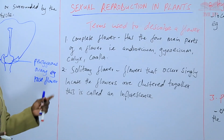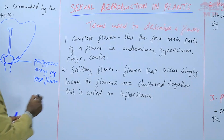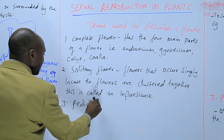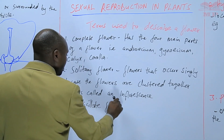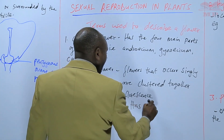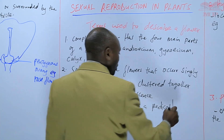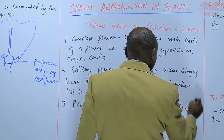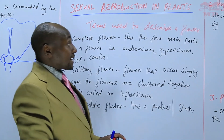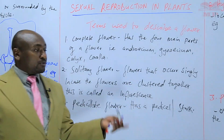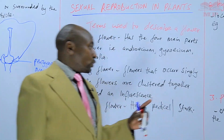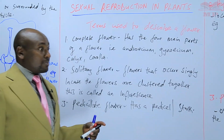You may also find a term such as a pedicellate flower. This simply means a flower that has a pedicel — a pedicel is a stalk, a flower that has a stalk. There are so many terms that are used to describe the flower. Some we have mentioned before, like the staminate flower and the pistillate flower, and we've also mentioned terms such as bisexual.